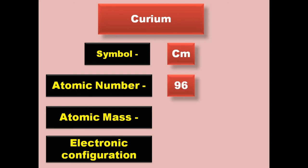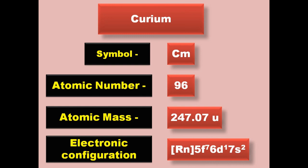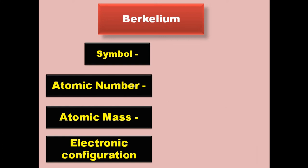Curium has symbol Cm, atomic number 96, atomic mass 247.07, electronic configuration [Rn] 5f7 6d1 7s2. Curium is an actinide and exists in solid form at room temperature.